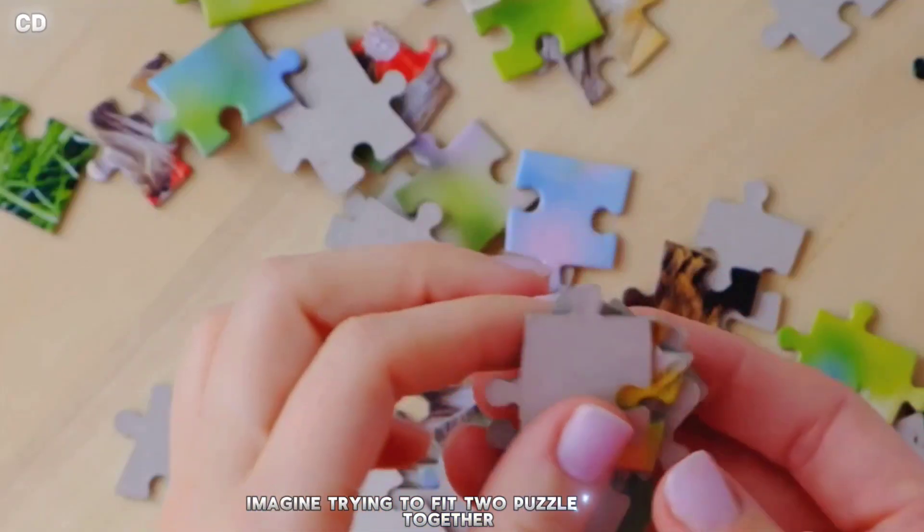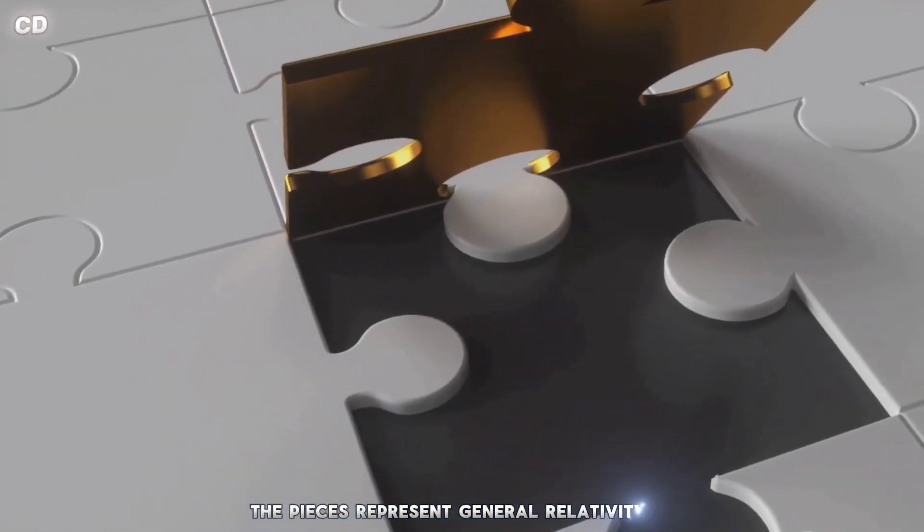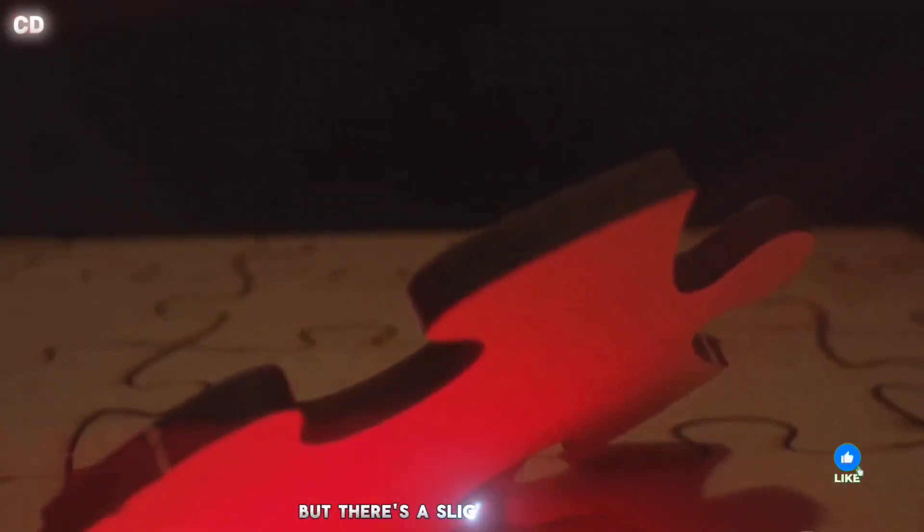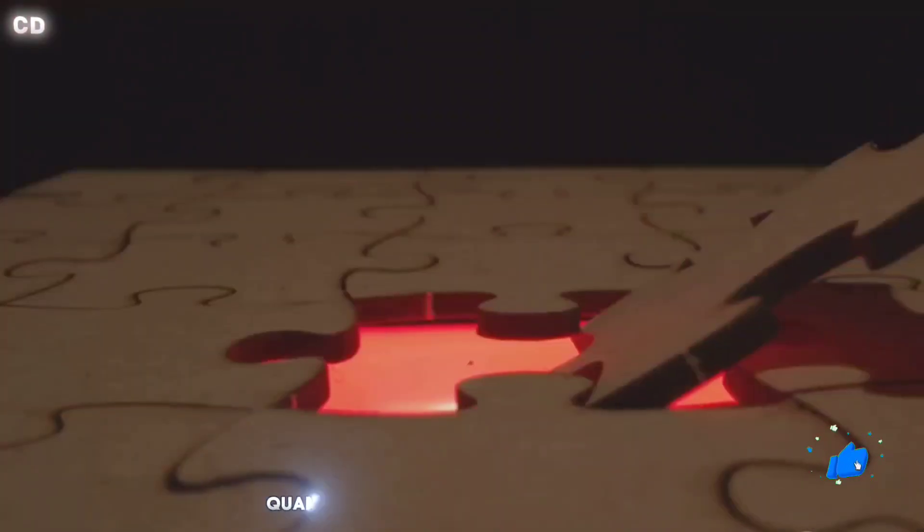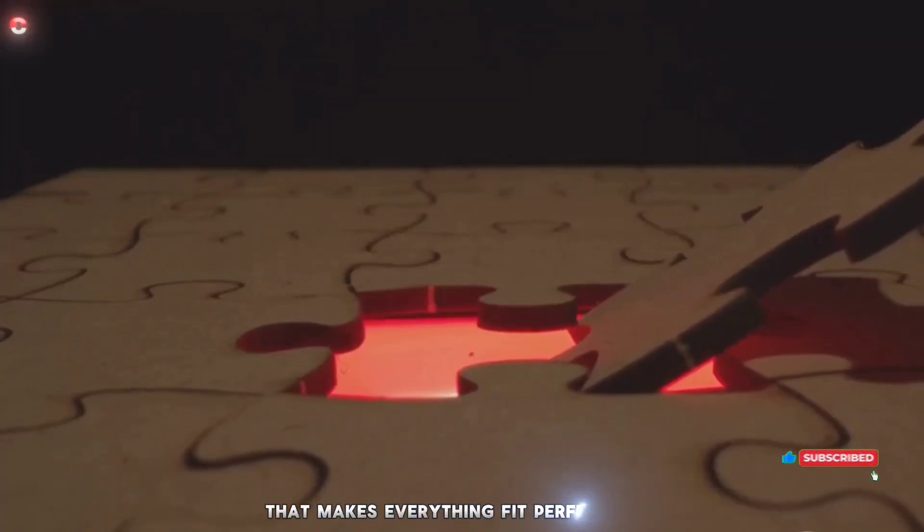Imagine trying to fit two puzzle pieces together. The pieces represent general relativity and quantum mechanics. They almost fit, but there's a slight mismatch. Quantum gravity is like finding the missing piece that makes everything fit perfectly.